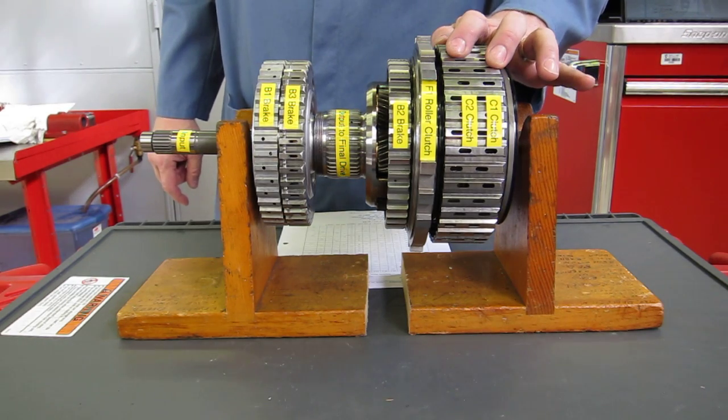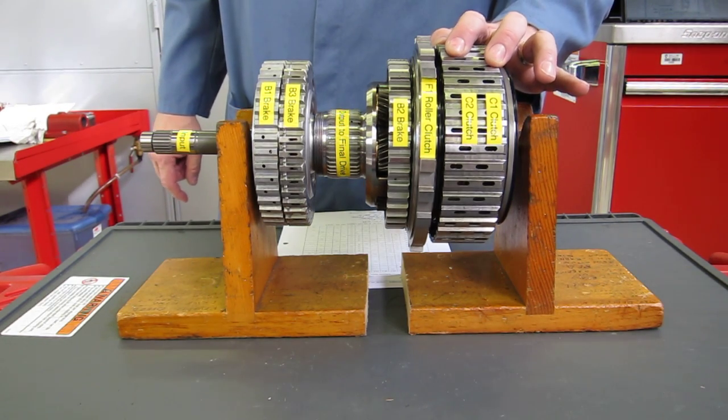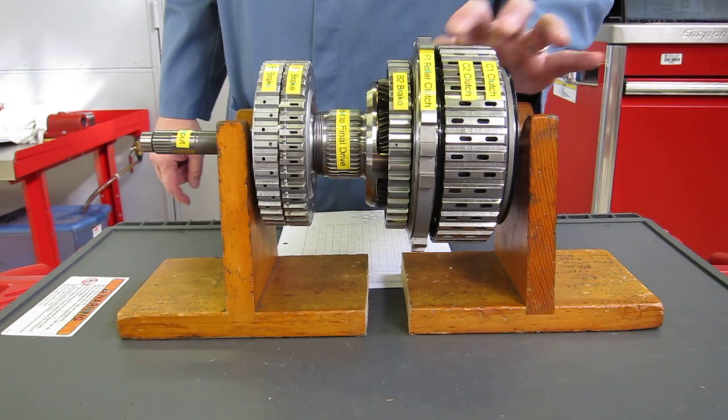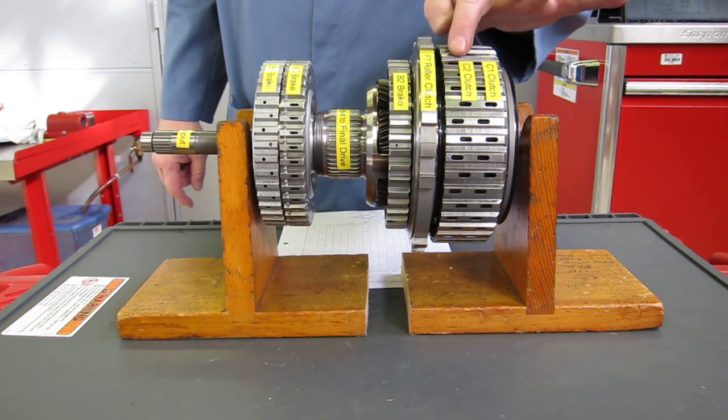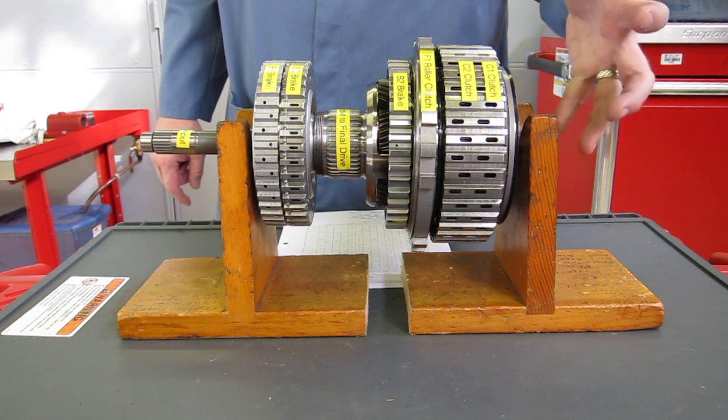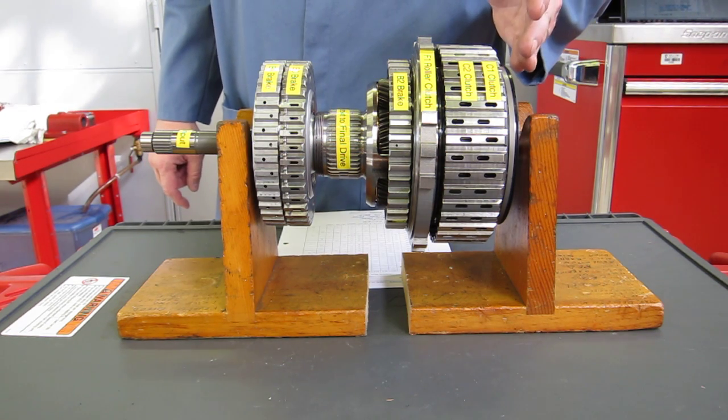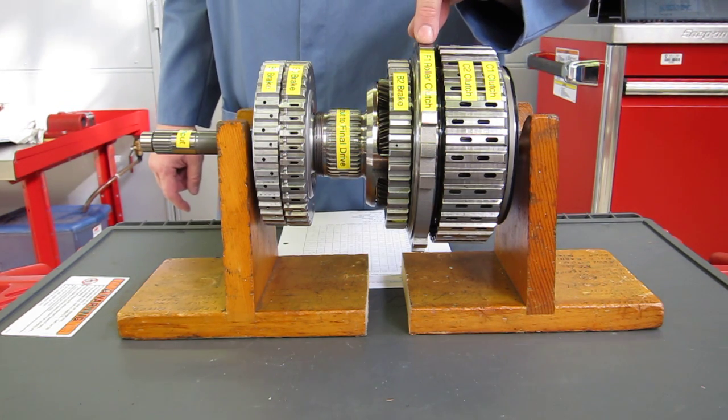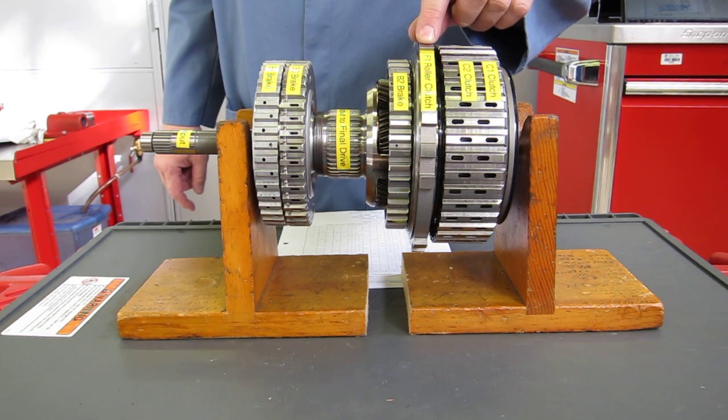Inside of this housing, the direct multiple clutch housing, is the C1 clutch and the C2 clutch. These are clutches that are going to be rotating and turning parts of the planetary gear set. We have the F1 roller clutch that only rotates in one direction.